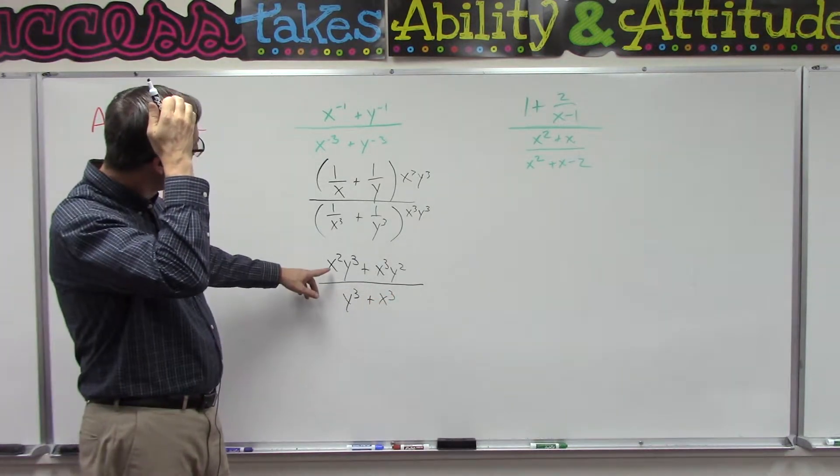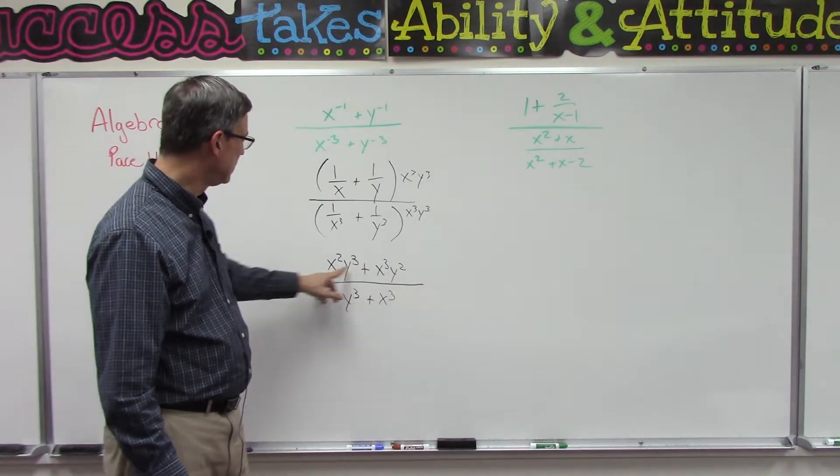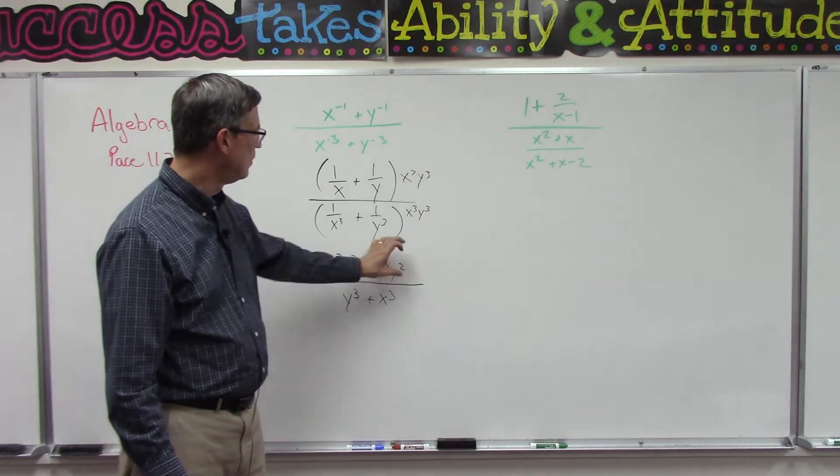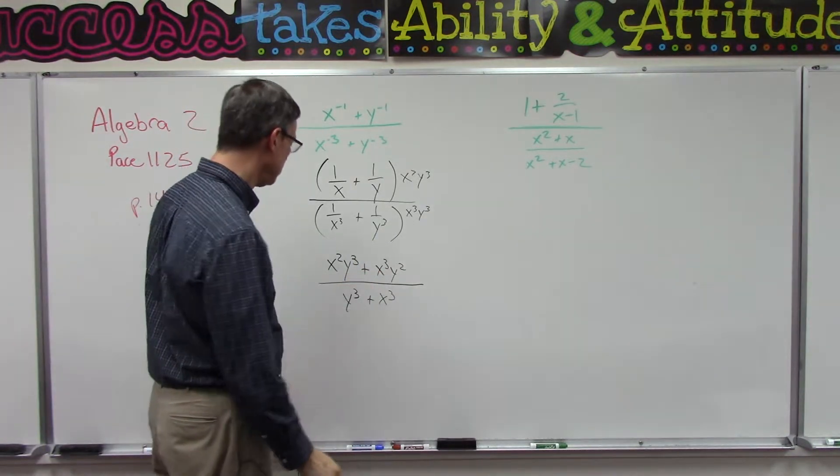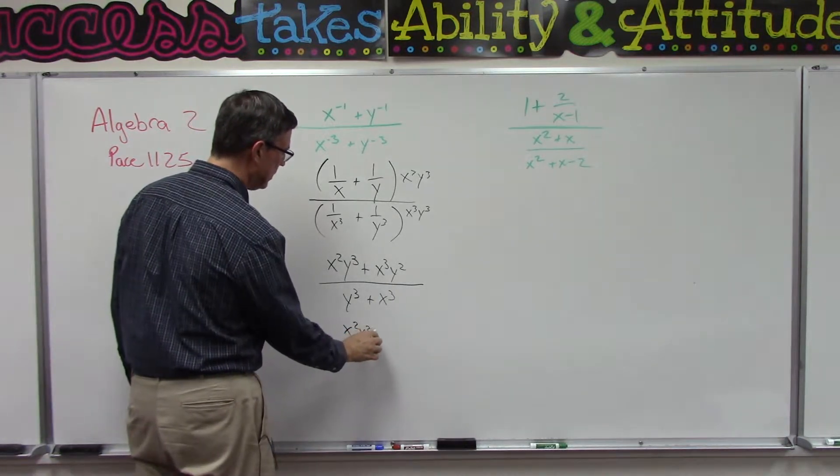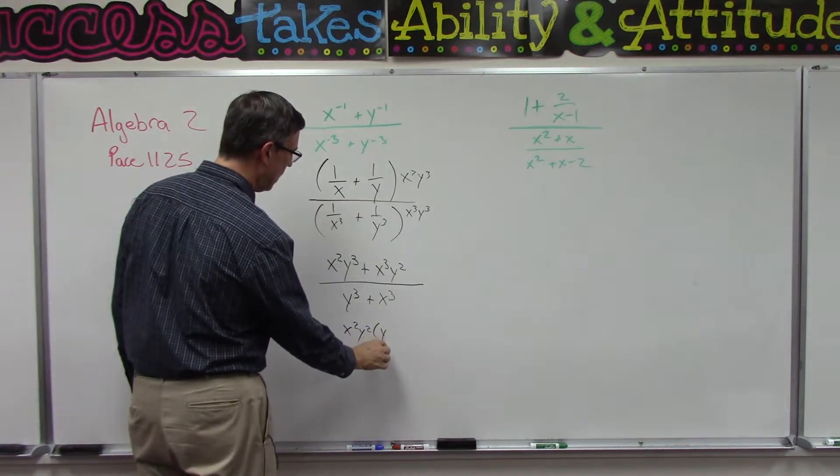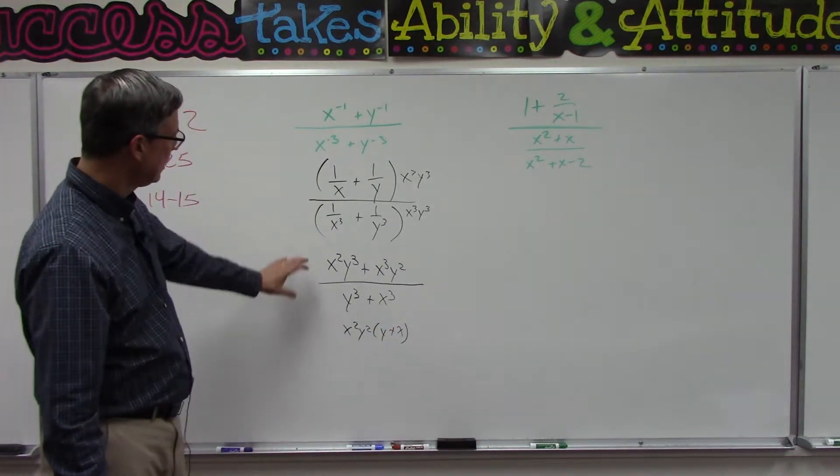Is there a common factor that I can take out of this to try to simplify just the numerator? It looks like I can take out X squared and Y squared: X squared Y squared times the quantity Y plus X. Everybody with me?